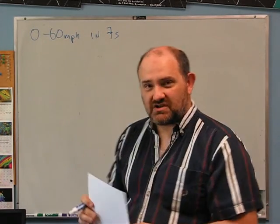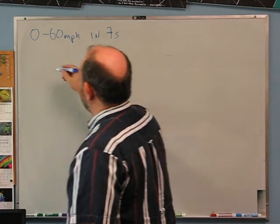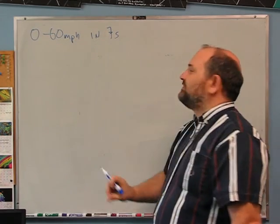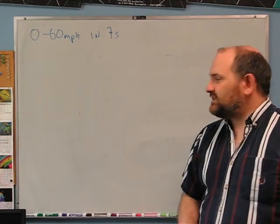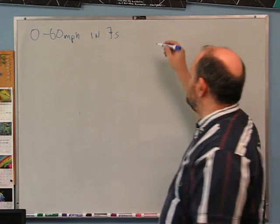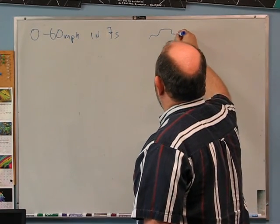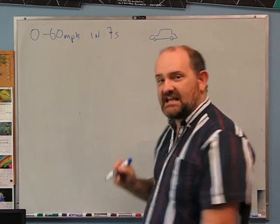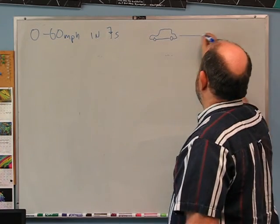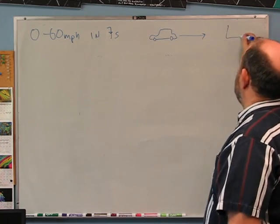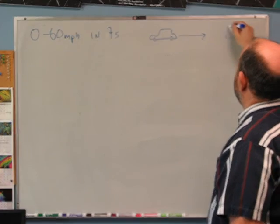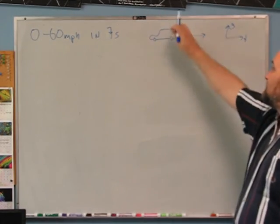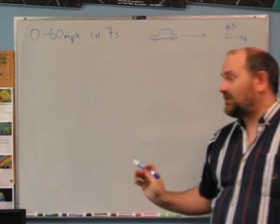This is mostly a unit conversion problem. We're really talking about the magnitude of acceleration, and the implication is that the car is moving in a straight line. So let's talk about the x component of acceleration. The y and z components of velocity are both zero.